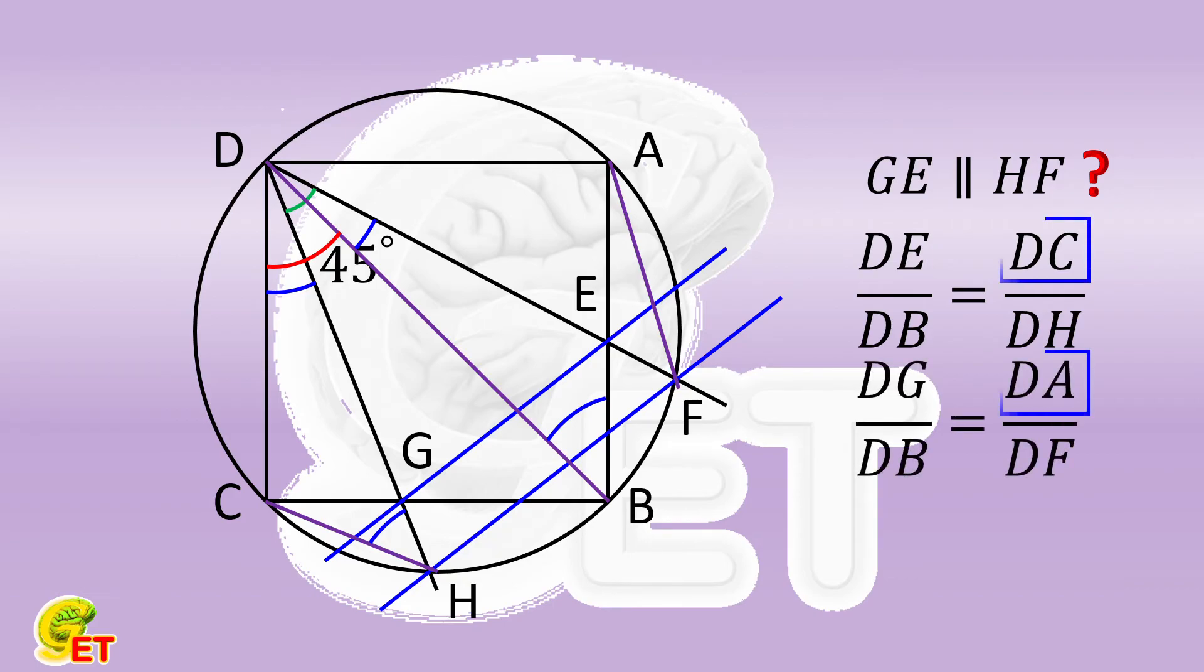DC is equal to DA, so DE over DG is equal to DF over DH. Then GE must be parallel to HF.